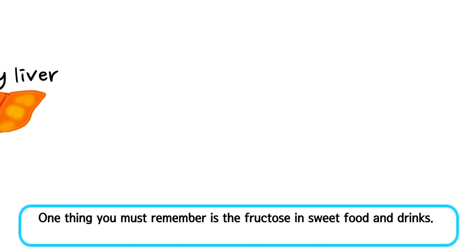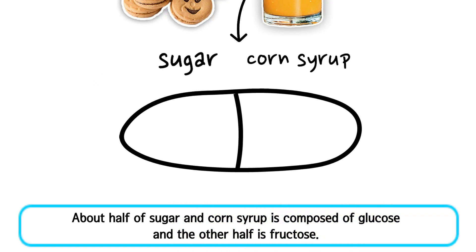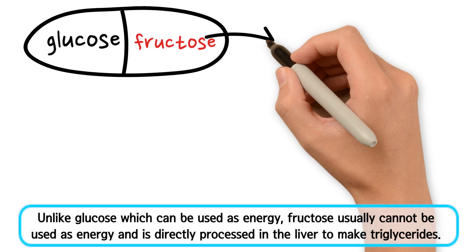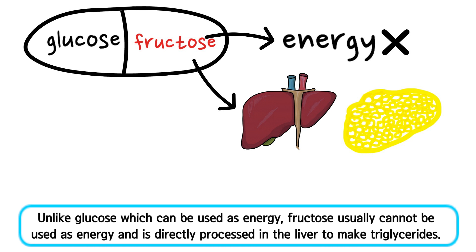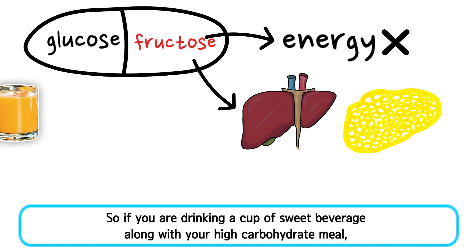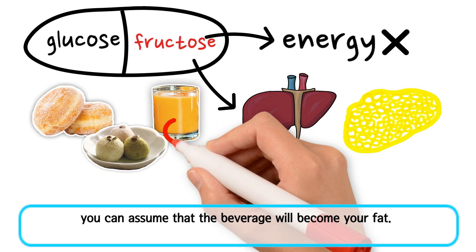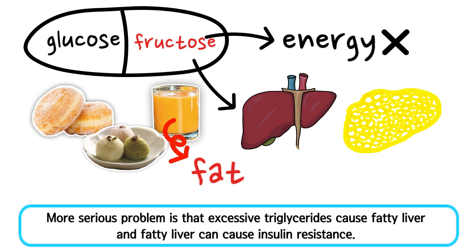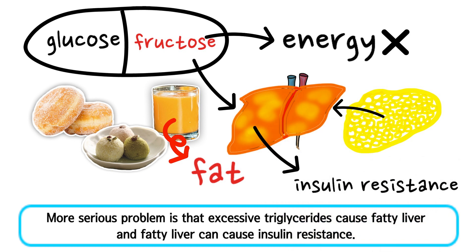One thing you must remember is the fructose in sweet food and drinks. About half of sugar and corn syrup is composed of glucose and the other half is fructose. Unlike glucose, which can be used as energy, fructose usually cannot be used as energy and is directly processed in the liver to make triglycerides. So if you are drinking a sweet beverage along with your high-carbohydrate meal, you can assume that the beverage will become fat. More seriously, excessive triglycerides cause fatty liver, and fatty liver can cause insulin resistance.